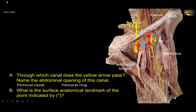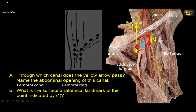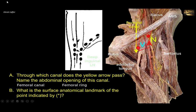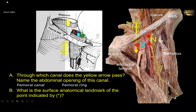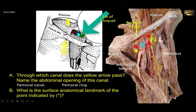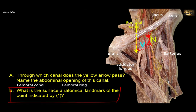The lymphatic vessels present in the canal communicate between the deep inguinal lymph nodes, located here, and the external iliac lymph nodes located in the pelvis. There is also a lymph node known as the lymph node of Cloquet within the femoral canal, and this lymph node drains the glans penis and the clitoris. What is the surface anatomical landmark of the point indicated by the asterisk?